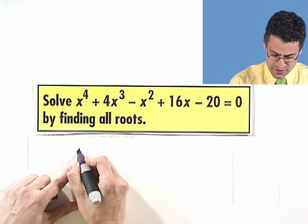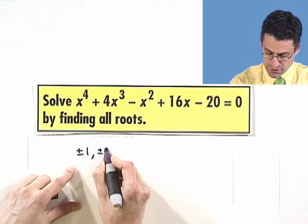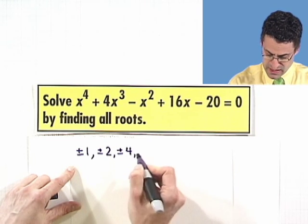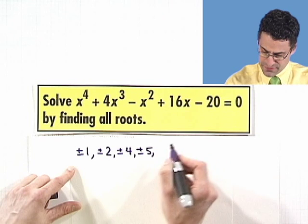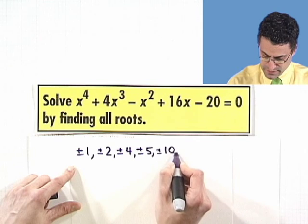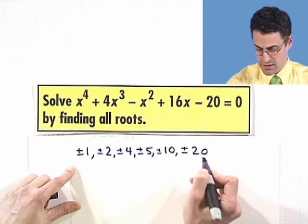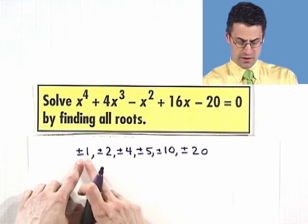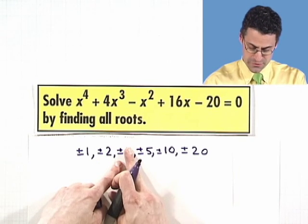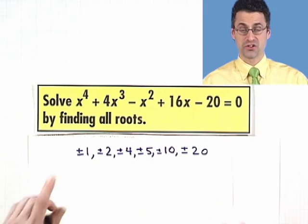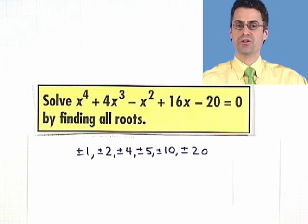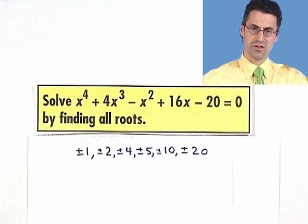What are all the factors of 20? Well, there's plus or minus 1. That's always a factor of any number. There's plus or minus 2. 3 is not a factor, but 4 is, and so is 5. 6 is not a factor, nor is 7, nor is 8, nor is 9, but 10 is. And the next factor after that is 20 itself. Notice by the way, in each case I have a plus or minus. So there's a plus 1, minus 1 we have to check, a plus 2, a minus 2, a plus 4, a minus 4, and so forth. There are 12 possible candidates for rational roots. None of them might be roots, but if they're going to be rational roots, it has to be one of those by the rational root theorem.